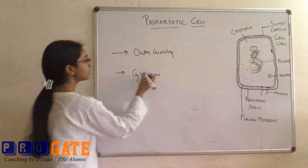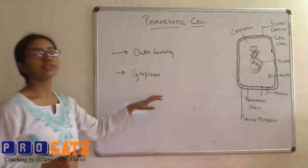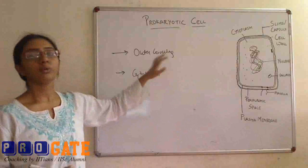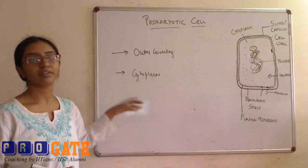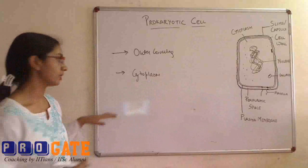This includes cytoplasm and the various other organelles that are present. In prokaryotic cells, mostly no organelles are present. But in eukaryotic cells, you would be having a large amount of organelles as well.